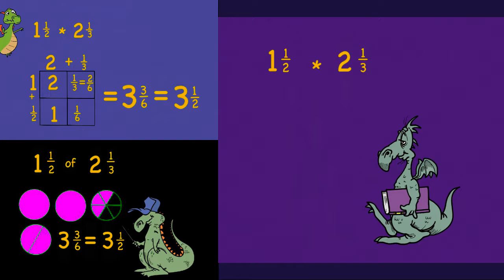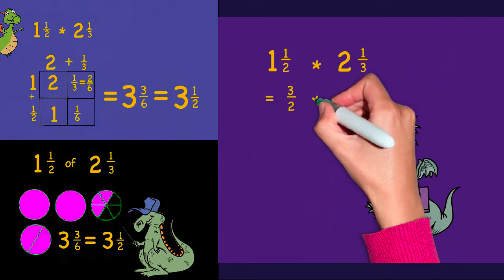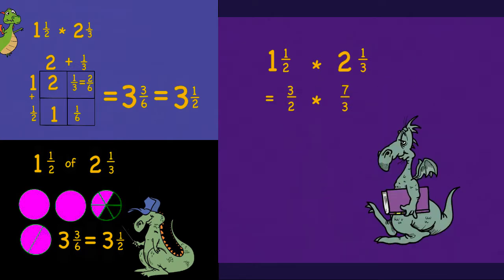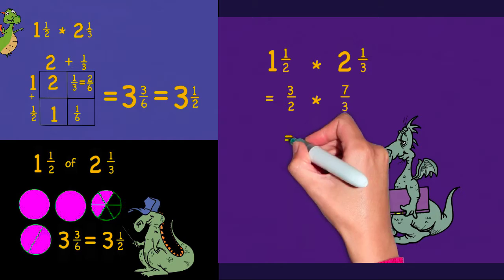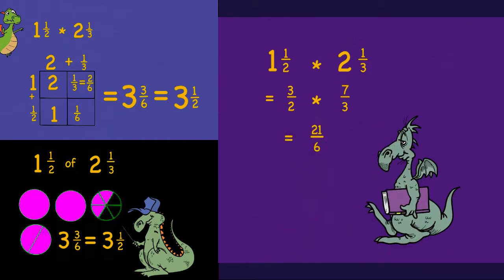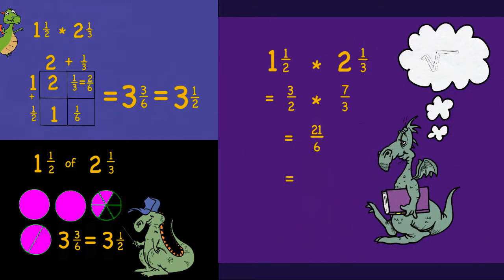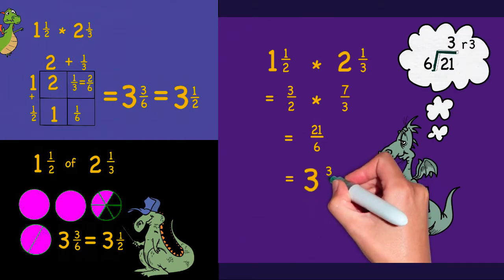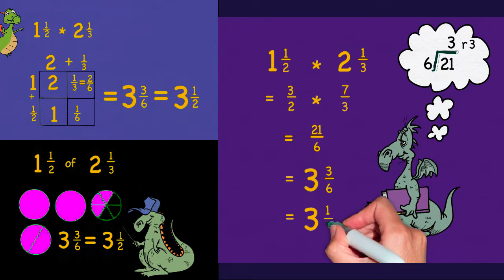Using the traditional algorithm I would first convert the mixed number into fractions. So one and a half would become three halves, and two and a third would become seven-thirds. Multiplying across I'll get twenty-one over six. To make this a mixed number I need to see how many times six goes into twenty-one. When I do that I get three and three-sixths or three and a half again.